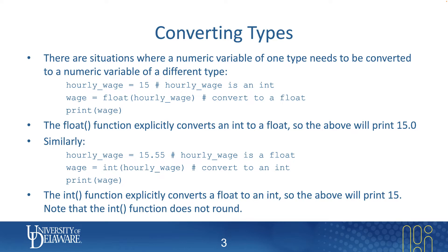When you print wage here, it would actually print 15.0, not 15. The 15.0 communicates to you that Python is considering this to be a float, not an integer. In the next example, if we assign hourly_wage explicitly to 15.55, we could still convert it to an integer using the int() function, and now wage has a value of int. In this case, it would not round 15.55 — it will actually truncate. So print will output 15, not 16. The int function only takes the integer portion of the number, not the decimal part.